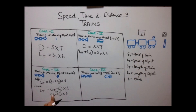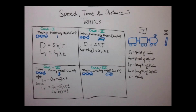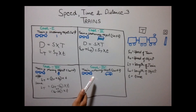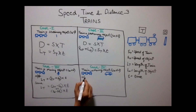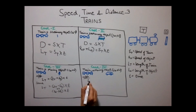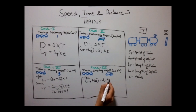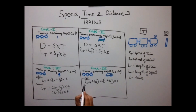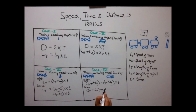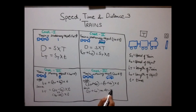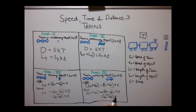This is the concept of relative speed — if the speed of the train is greater, use ST minus SO; if the speed of the object is greater, use SO minus ST. The fourth case is when a train is moving and the object's length is not zero. When moving in opposite directions: LT plus LO equals (ST plus SO) into T. When moving in the same direction: LT plus LO equals (ST minus SO) into T, or (SO minus ST) into T.